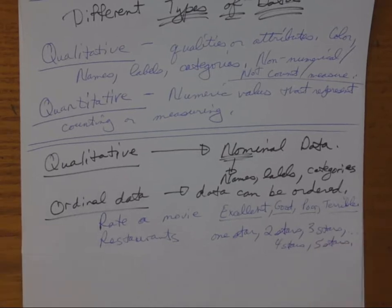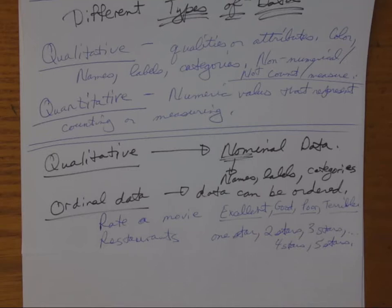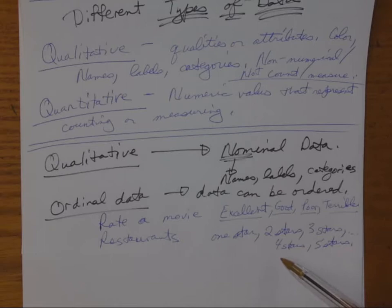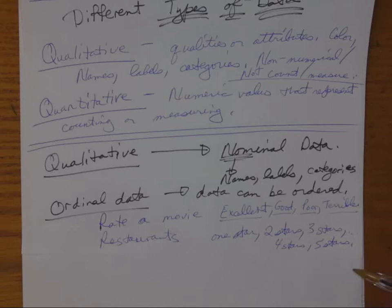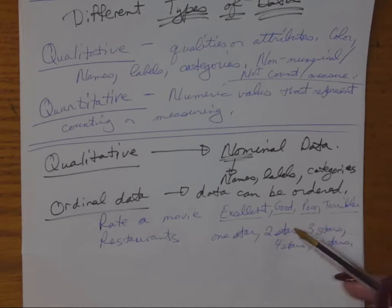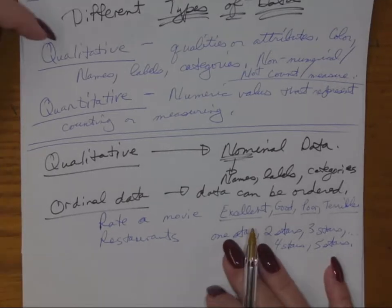With ordinal data, the order means something, but the differences between levels aren't necessarily measurable. For instance, can you tell me exactly how much better a five-star restaurant is than a four-star restaurant? We know it's supposed to be better, but it's not easy to measure that difference. Maybe four-star restaurants cost about thirty dollars a person and five-star cost a hundred dollars, but there's no set scale telling me exactly the difference between a two-star and a three-star restaurant.